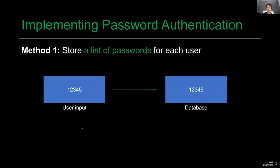Now let's talk about how to actually implement password-based authentication. You have a number of users trying to log into your website — how do you verify their identity using a combination of their username and password? The most naive way is to literally store the plaintext list of passwords in the database. Alice keys in '12345', that is compared to what is literally stored in the database to see whether it matches — this is fine as long as we keep the database secret.